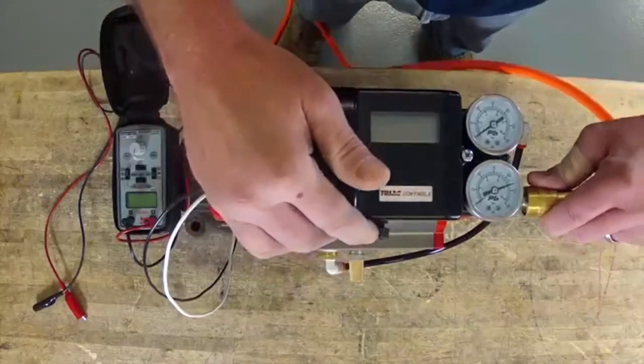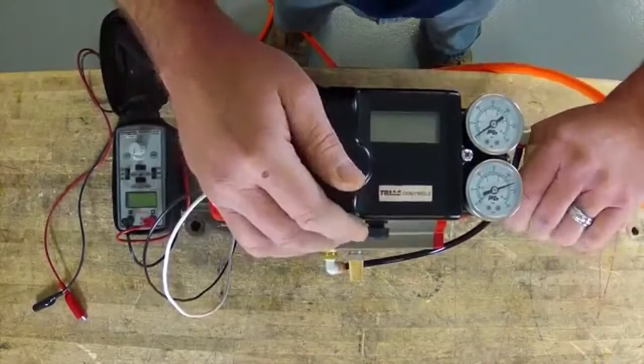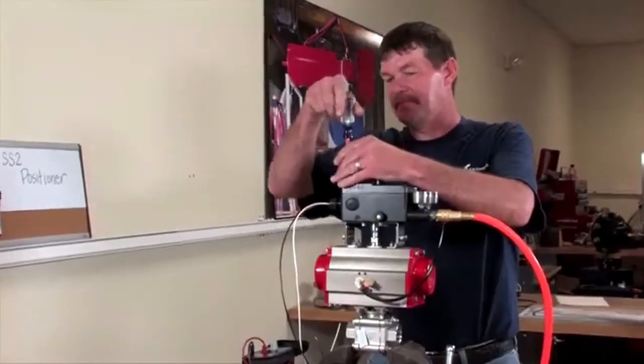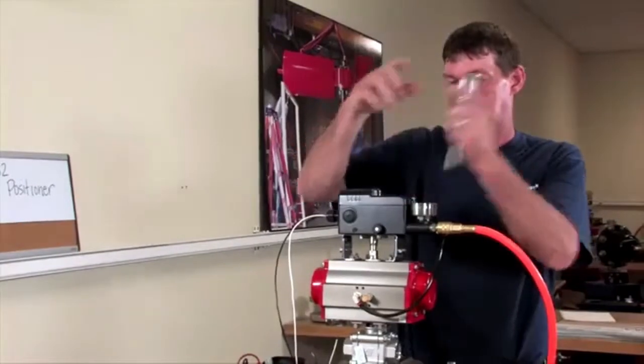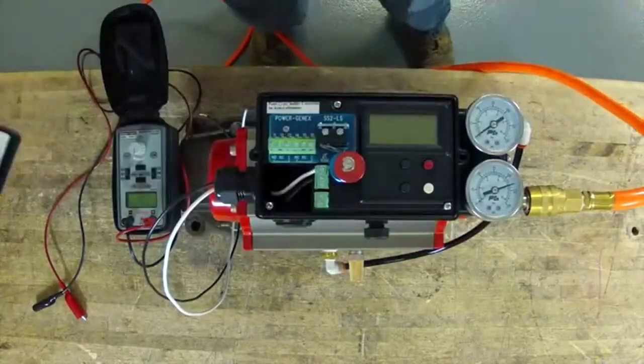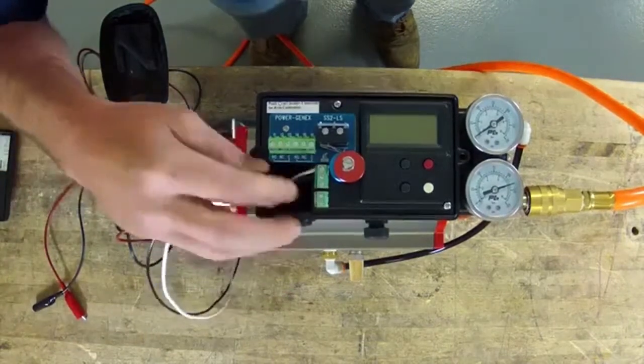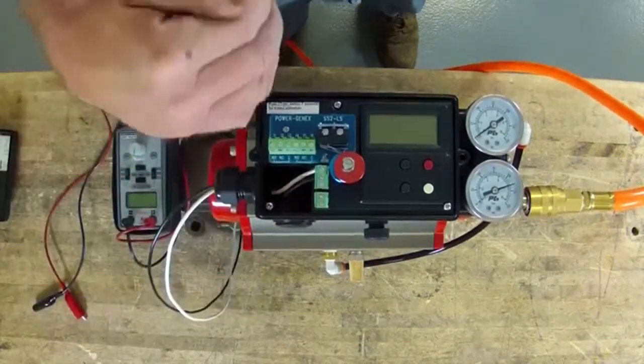We're going to hook our air up, take the lid off. I have already pre-wired this. Your two wires will go on the plus and the minus to the back side.